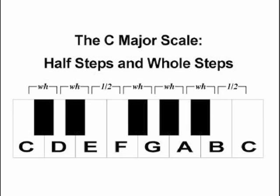Now the C major scale goes from C to D, that's a whole step, D to E is a whole step, E to F is a half step, F to G is a whole step, G to A is a whole step, A to B is a whole step, and B to C is a half step.